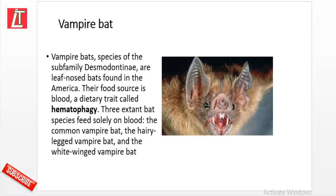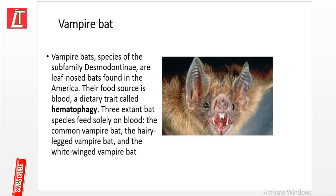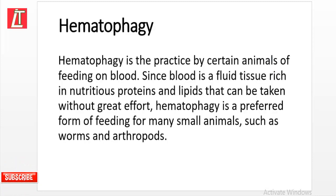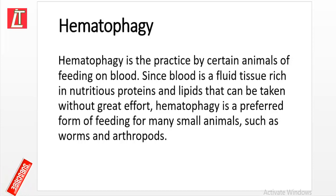An example of animal altruism is the vampire bat. Vampire bats are species of the subfamily Desmodontinae, leaf-nosed bats found in America. Their food source is blood, a dietary trait called hematophagy. Three extant bat species feed solely on blood. Hematophagy is the practice of certain animals feeding on blood, since blood is a fluid tissue rich in nutritious proteins and lipids that can be taken without great effort.